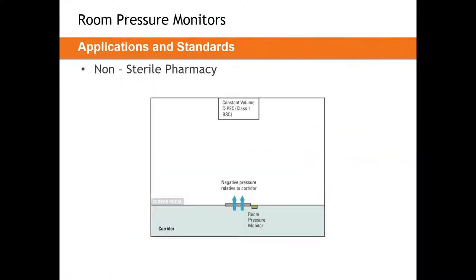The first pharmacy layout is a non-sterile compounding pharmacy. No anteroom is required, so we go directly from the corridor into the buffer space. This is a negatively pressurized space with 12 air changes per hour and a room pressure of minus 0.01 to minus 0.03 inches. Inside you'll typically find a Class I biological safety cabinet. Placement of the room pressure monitor and sensor are practically identical to isolation rooms — right beside and above the door.